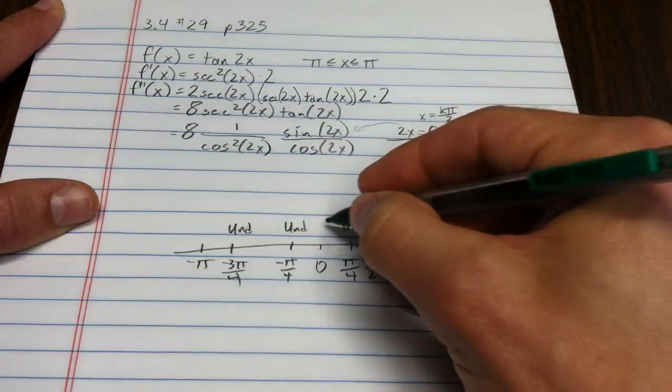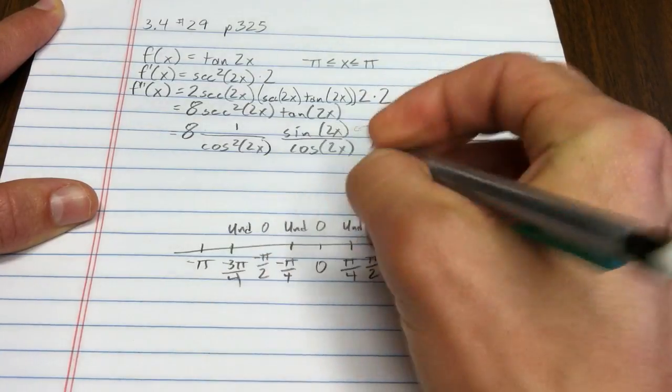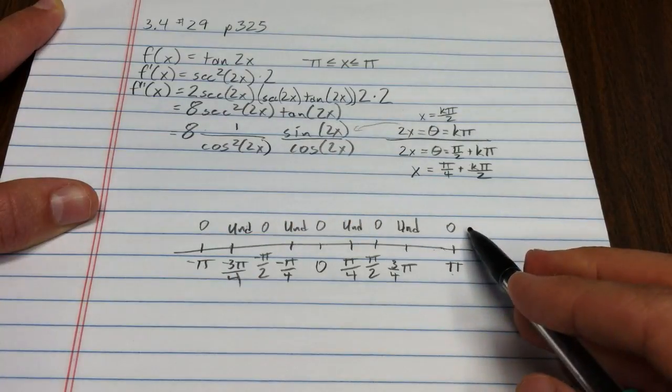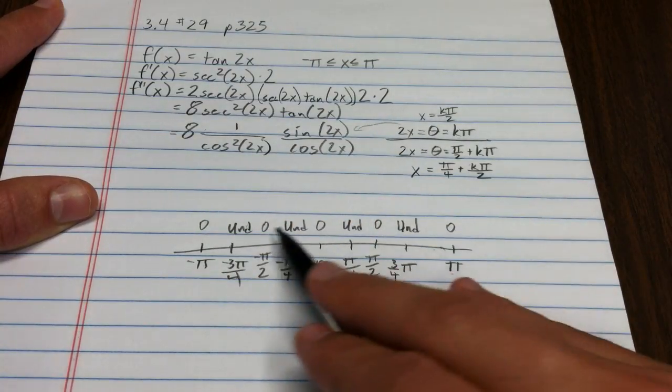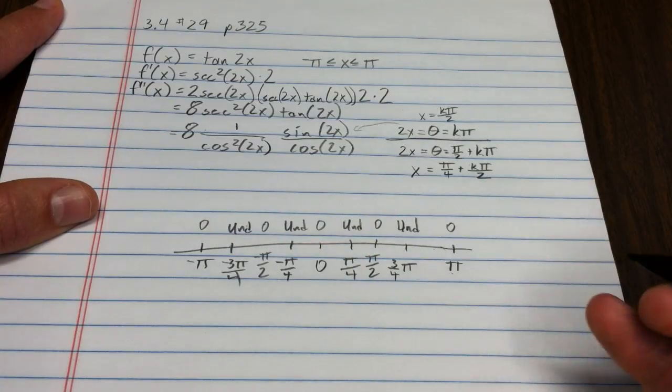0, 0, 0, negative pi halves, and negative pi. Okay, so, this has a lot of places where the second derivative is 0, a lot of places where the second derivative is undefined.